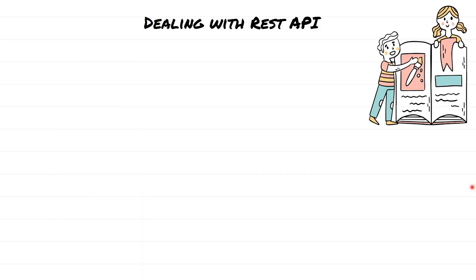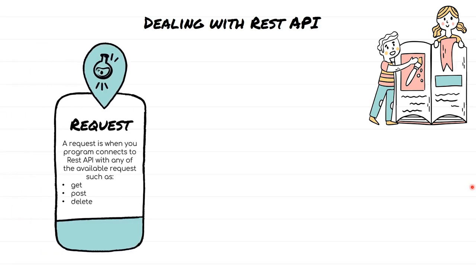Let's use GET request as an example and learn how we can deal with REST API using the Python programming language. Whenever we are dealing with REST API, there are a couple of things which we need to remember. One thing is that whenever you are dealing with REST API, you are going to use a program to make a request to it.